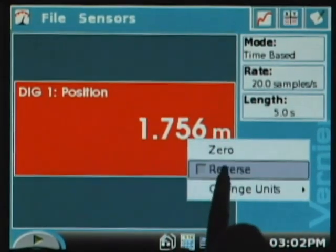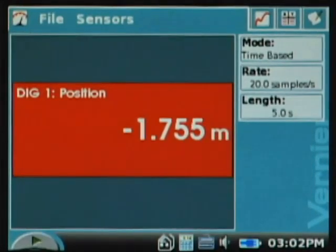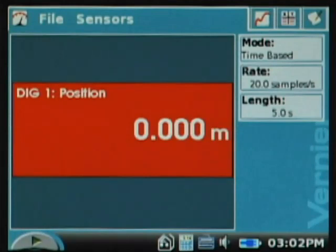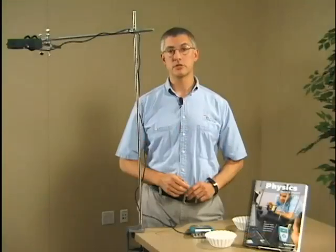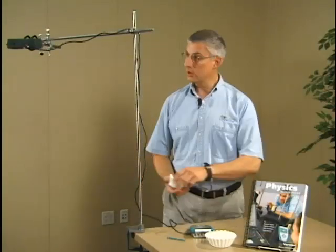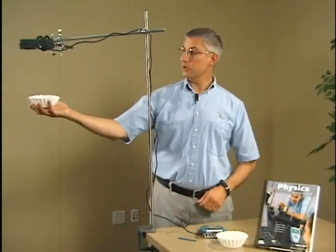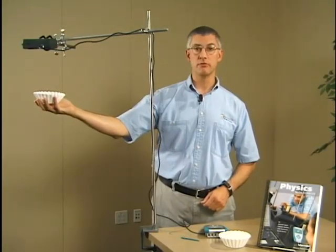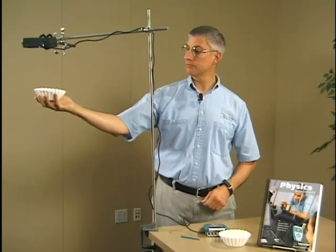I'm going to do that now. So I'm going to reverse it, and I'm going to select zero when nothing is under the motion detector, and that means that the system is going to read zero at this time when I hold something under it. It's reading now 1.5 meters because I'm 1.5 meters above the floor.